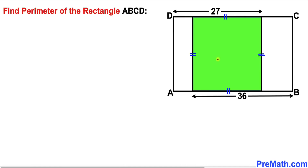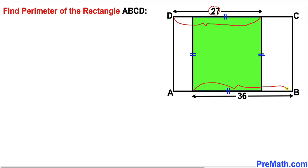Welcome to pre-math. In this video we have got a green shaded square inside rectangle ABCD, as you can see in this diagram. This side length is 27 units whereas this side length is 36 units. Now we are going to calculate the perimeter of this rectangle ABCD.